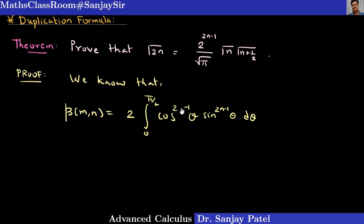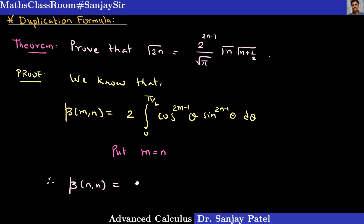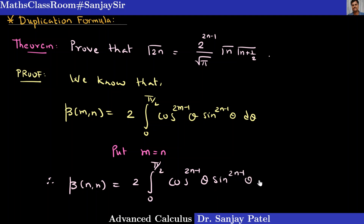In this beta function formula, I want to substitute m equal to n. Putting m equal to n, we get beta(n, n) is equal to 2 times integral from 0 to π/2 of cos raised to 2n minus 1 theta, into sin raised to 2n minus 1 theta, d theta.